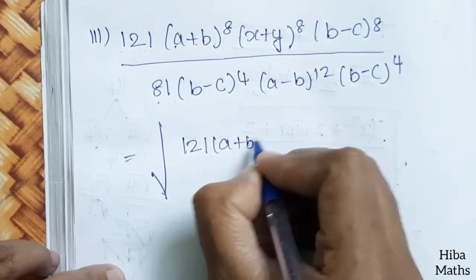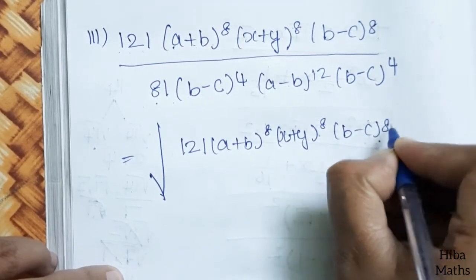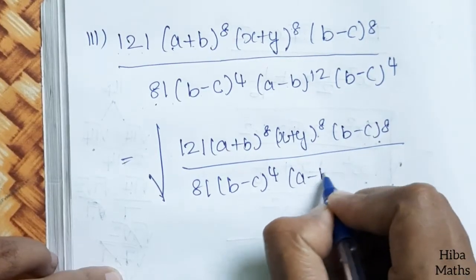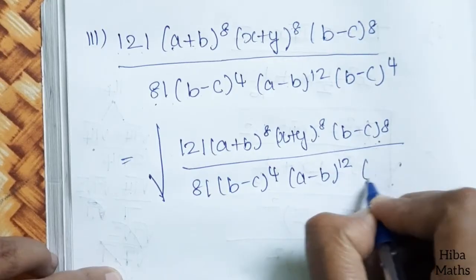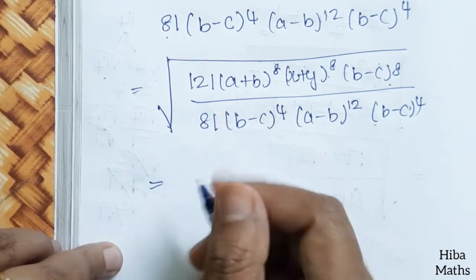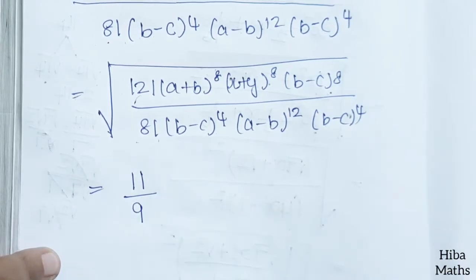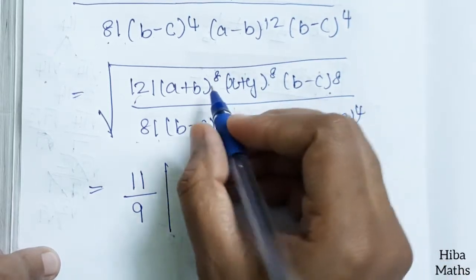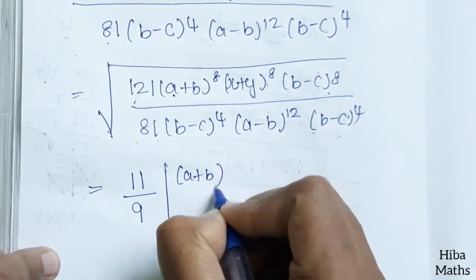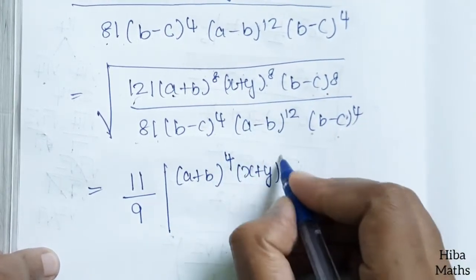We apply the square root: 121 is 11 squared so its root is 11, and 81 is 9 squared so its root is 9. For the variables, (a+b) power 8 divided by 2 gives power 4. (x+y) power 8 divided by 2 gives power 4. (b-c) power 8 divided by 2 gives power 4.